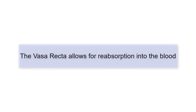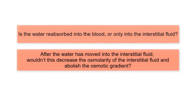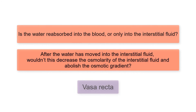Number 4. The Vasa Recta allows for reabsorption into the blood. Two questions commonly arise at this point. First, is the water reabsorbed into the blood or only into the interstitial fluid? Second, after the water has moved into the interstitial fluid, wouldn't this decrease the osmolarity of the interstitial fluid and abolish the osmotic gradient? The answer to both of these questions lies in the Vasa Recta.